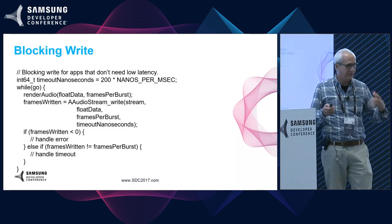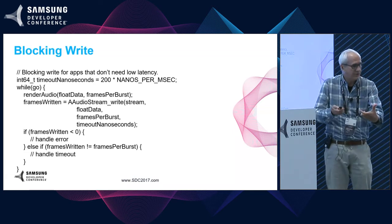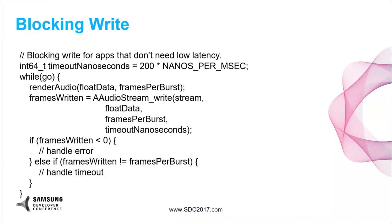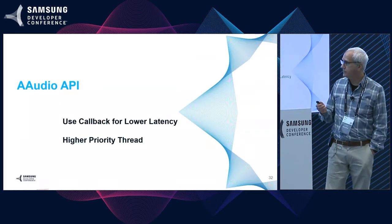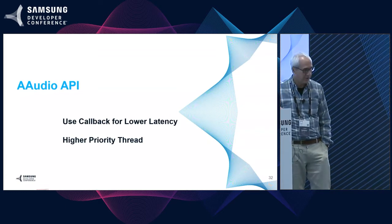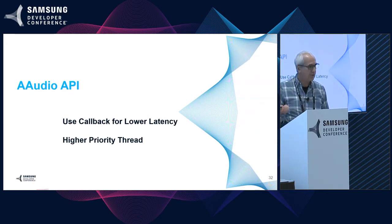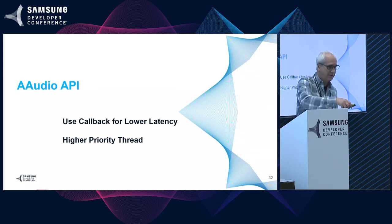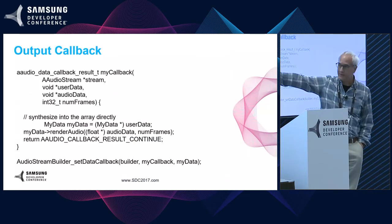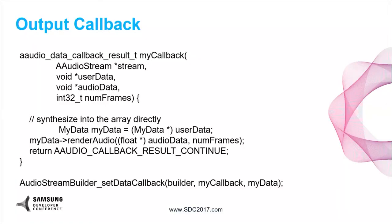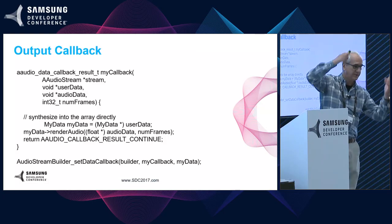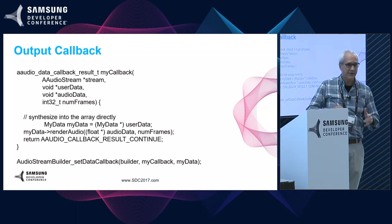You can do a blocking write, which means you write data and the write will sleep until it's done, then return. You render some more data, then do another blocking write. That's a technique you'd use if you weren't that concerned about latency. If you really want lower latency, you probably want to use the callback API. The callback API gives you a high-priority thread that calls into your function — you write a callback function, it passes you the stream and a buffer to put data into. You render into the buffer, and it calls you when it's ready for the data.